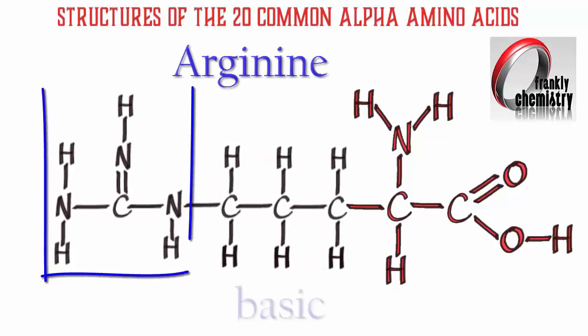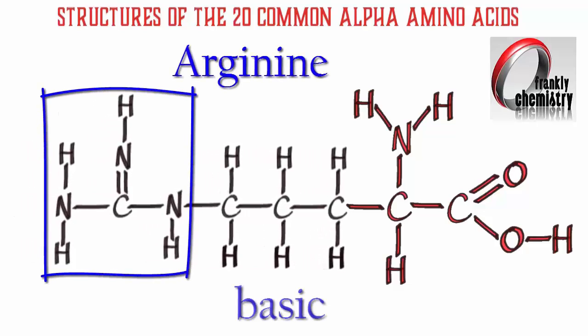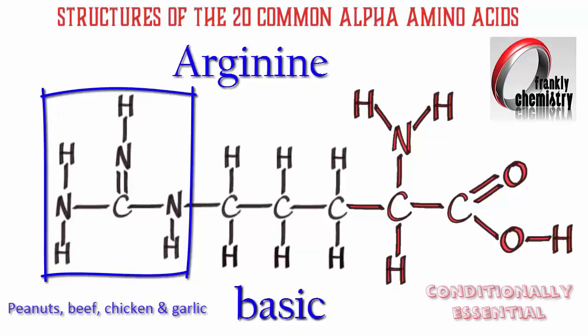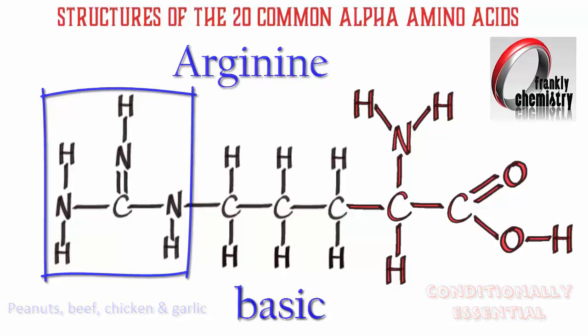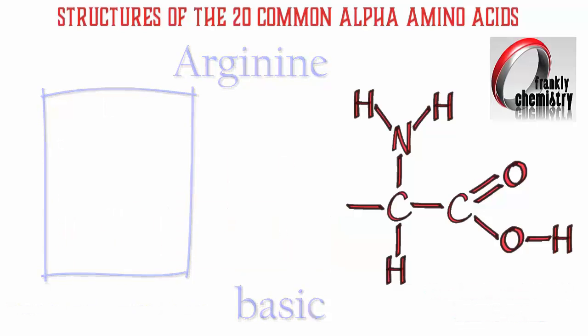Next we have the amino acid arginine. It's basic, given those three nitrogens as part of the R group. It's found in peanuts, beef, chicken, and garlic, for example, and is conditionally essential.